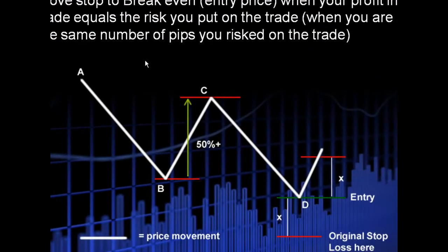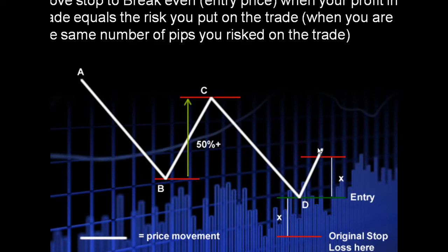We see here that ABCD is the price movement. We've got a retracement that is 50% or greater, but not more than 90%, so this is a valid ABCD play. We enter immediately for a long at point D. Why are we going long? Because C to D is downwards, so we're going in the opposite direction. We're looking for a reversal at point D, so we're going long.